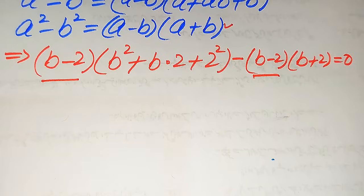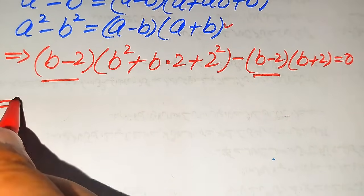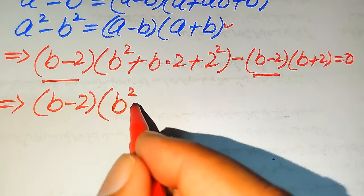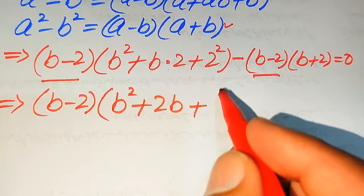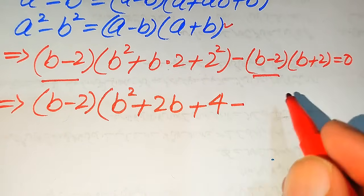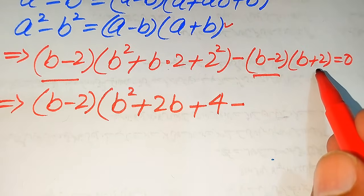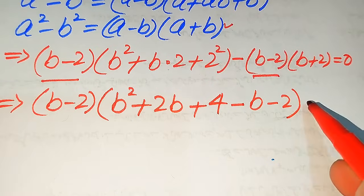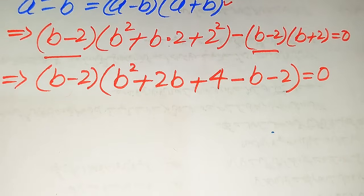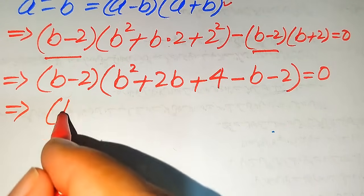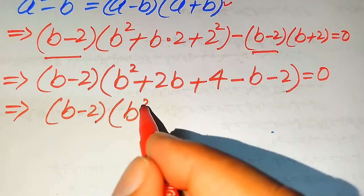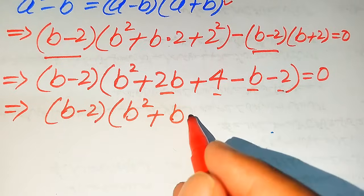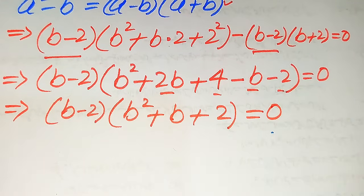Both terms involve (b minus 2), so b minus 2 is the common factor. Taking (b minus 2) common, we get the remaining values: b squared plus 2b plus 4, minus (b plus 2). The negative sign is multiplied through, giving b squared plus 2b minus b plus 4 minus 2, which simplifies to b squared plus b plus 2, and this whole equation equals 0.